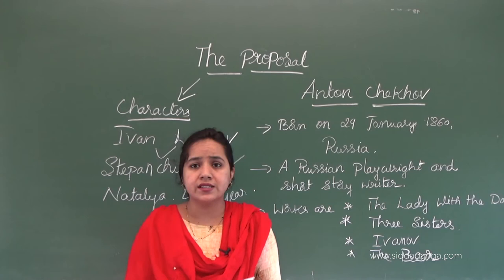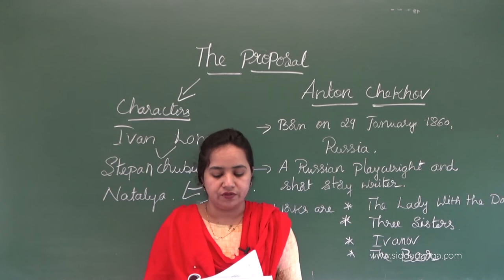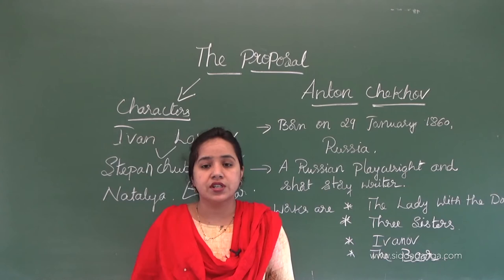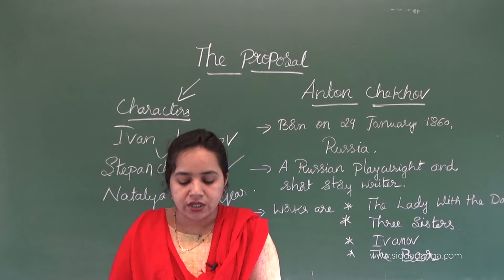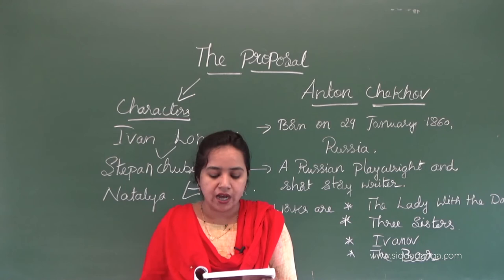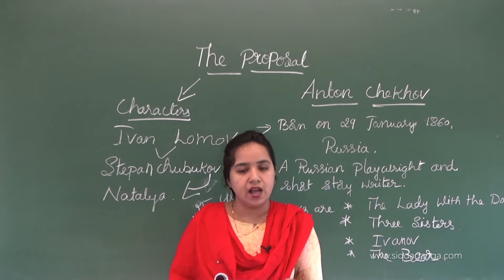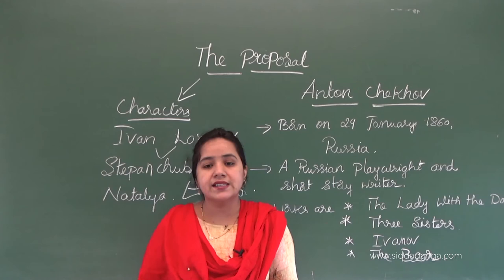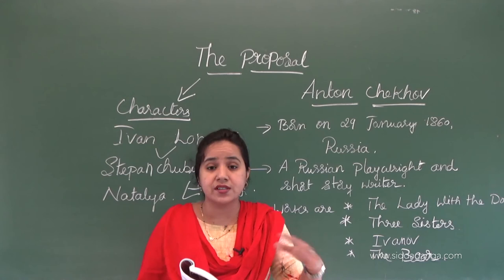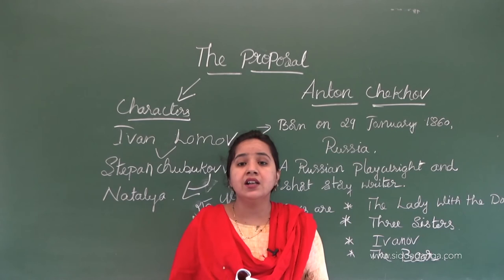Let's see the characters in this play. The characters are: Stepan Chubukov, a landowner; Natalia Stepanova, the 25-year-old daughter of Chubukov; and Ivan Veselovich Lomov, a neighbor of Chubukov — a large and hearty but very suspicious landowner. Suspicious means he is always in doubt and a confused manner.